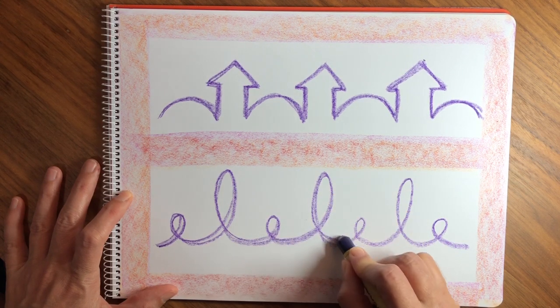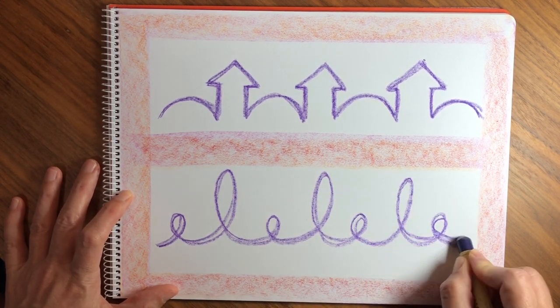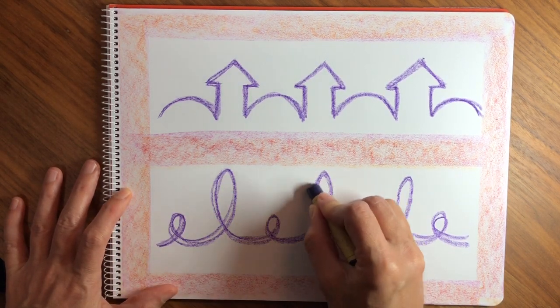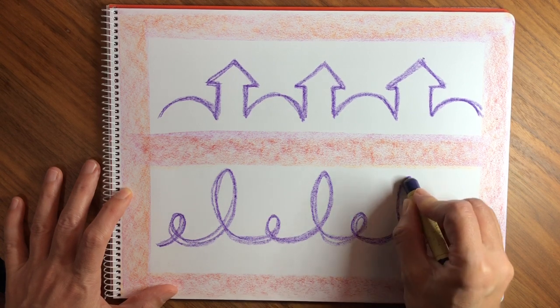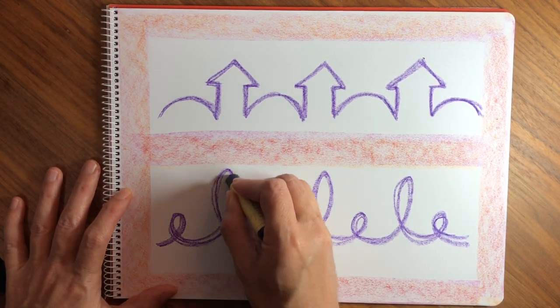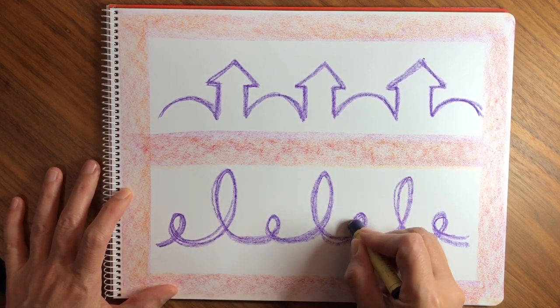Again, we're not trying to be perfect. We're trying to just feel them coming to the same size and get the feeling - what it feels like to make those loops. Always start from the left and end when you reach the last one.